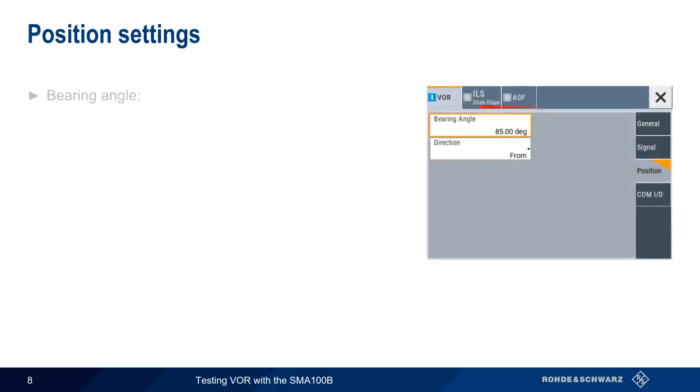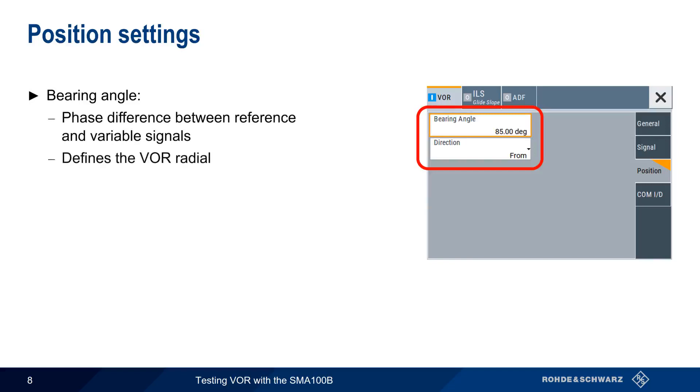On the other hand, the Position tab contains the Bearing Angle parameter, which is the most commonly changed parameter in VOR testing. Recall that the bearing angle is the phase difference between the reference and variable signals, and that this difference defines the VOR radial. If we're on the 85 radial, the difference in phase between reference and variable signals is 85 degrees.